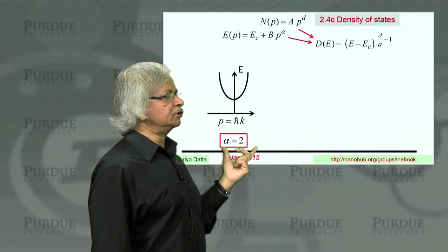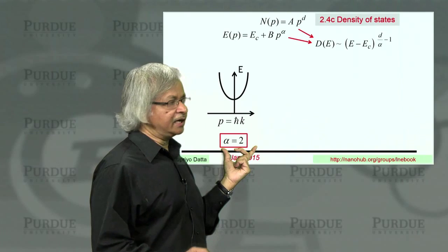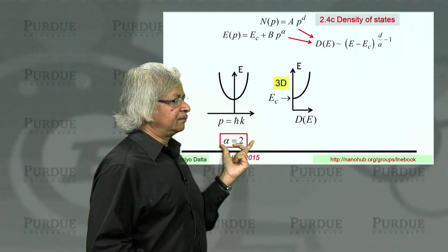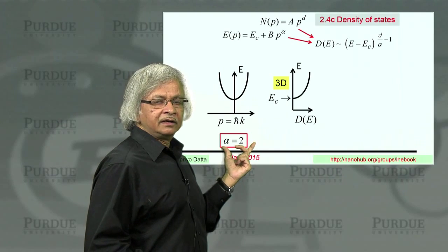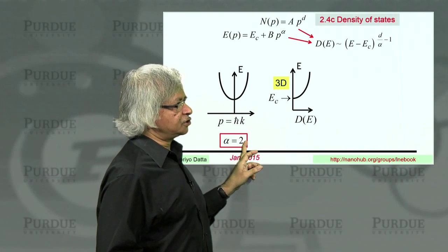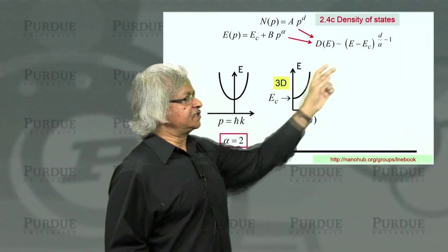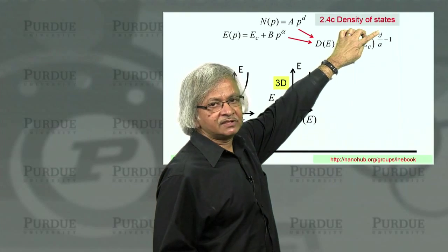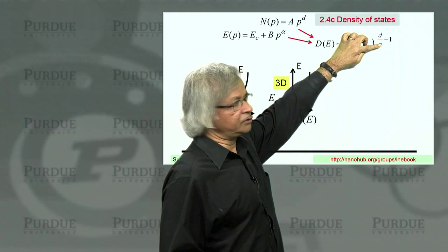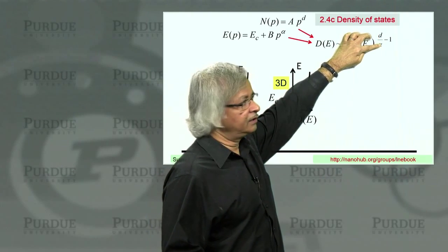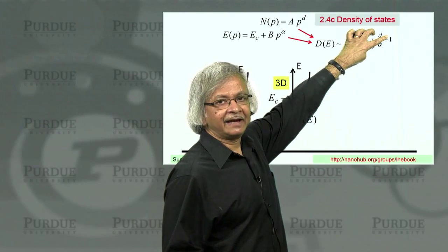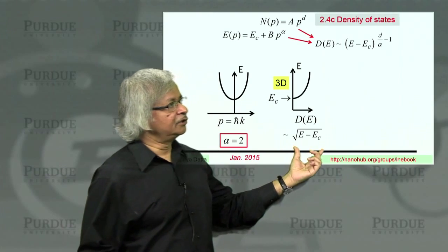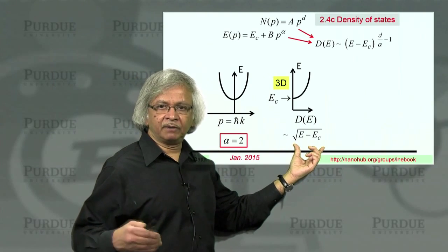Let's now look at a specific example. Let's assume alpha equals 2 - the most common case, this parabolic band. If you put alpha equals 2 and consider three dimensions, that means d is 3. So the exponent here becomes 3 divided by 2, which is 1 and a half, minus 1, so that's like a half.